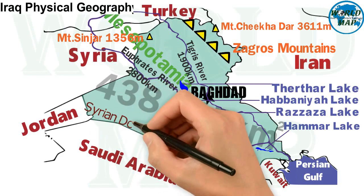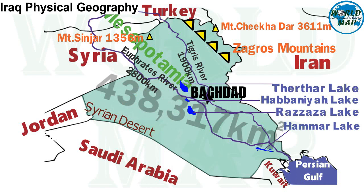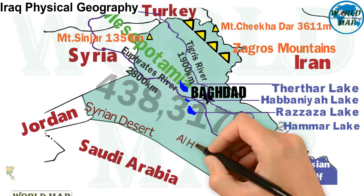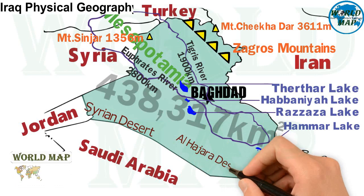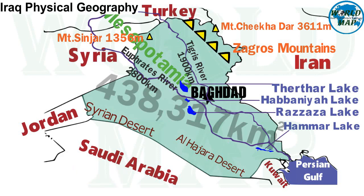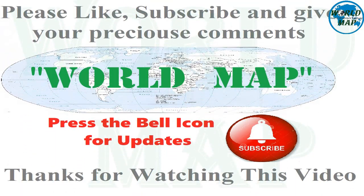The Syrian desert is a region of desert, semi-desert, and steppe covering 500,000 square kilometers of the Middle East, including parts of southeastern Syria, northeastern Jordan, northern Saudi Arabia, and western Iraq. The southern desert is known as Al-Hajarah in the western part and Al-Dibdibba in the east. Both deserts are part of the Arabian desert.